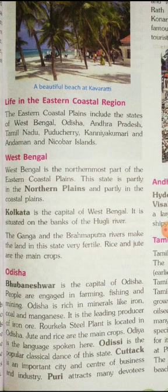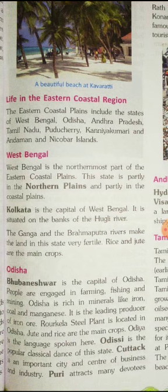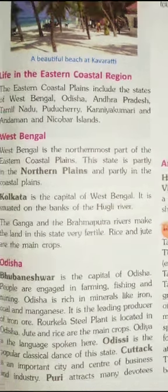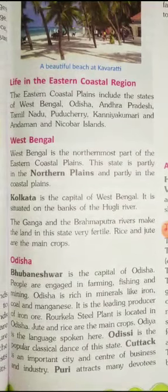The land of this state is very fertile. The Ganga and the Brahmaputra rivers make the land in this state very fertile. The main crops which are grown here are rice and jute.